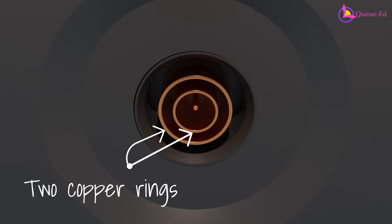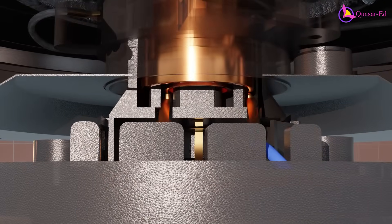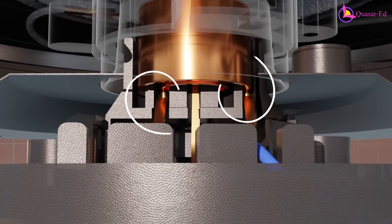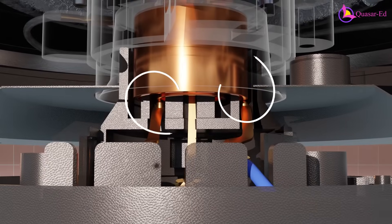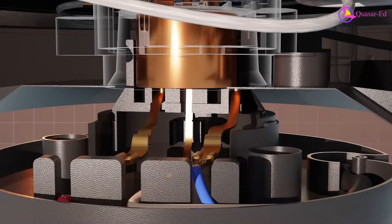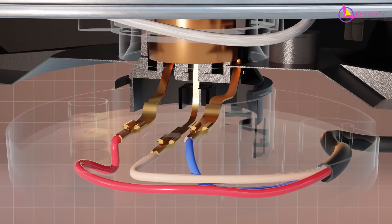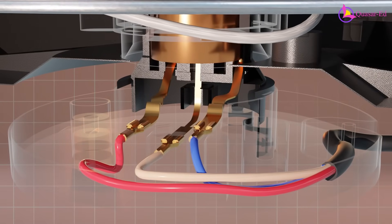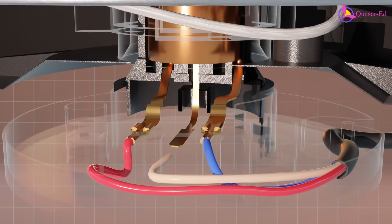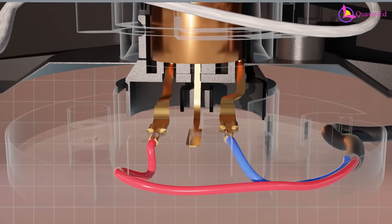Inside the female socket of the kettle body, there are two concentric copper rings and one copper pin at the center. When the kettle body is placed on the base plate, these copper rings sit on top of the two copper strips and get the electricity from the outlet. The center copper pin also gets connected to the ground, but most of the time it is left unconnected.